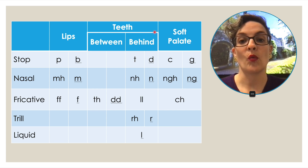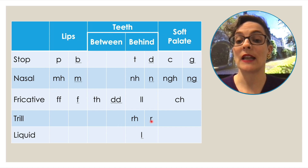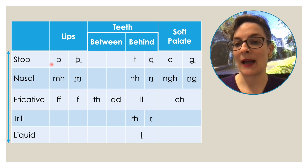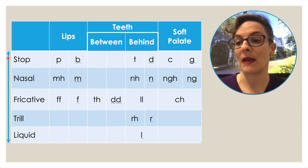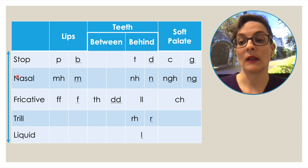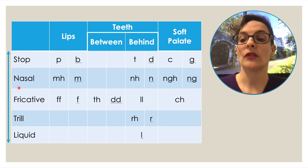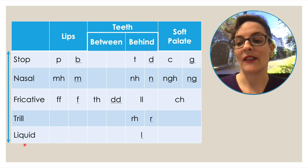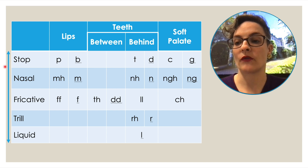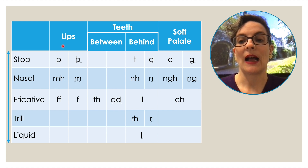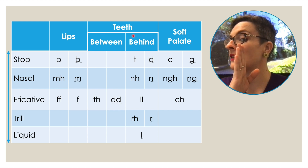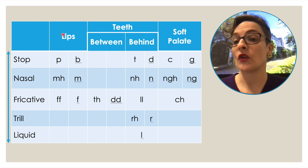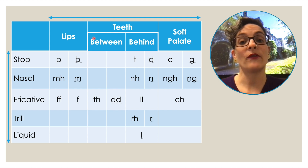We've now filled in the where dimension of our table and it's complete. The table makes more sense than you might have realized: on the how dimension, we're ordering letters from a completely closed mouth through to more open, with fricatives a little more open and liquids so open the air comes out quite easily. On the where dimension at the top, it goes from the front of your mouth — lips — moving back to the teeth, then to the soft palate. So the format of the table reflects how sounds are organized from front to back and from closed to open.